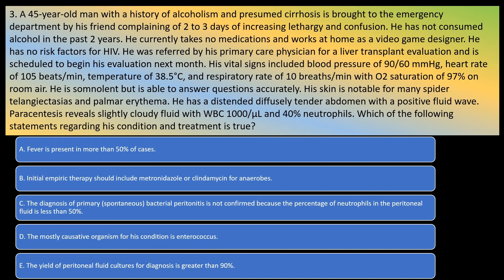Paracentesis reveals slightly cloudy fluid with WBC 1000 per microlitre and 40% neutrophils. Which of the following statements regarding his condition and treatment is true? A: Fever is present in more than 50% of cases. B: Initial empiric therapy should include metronidazole or clindamycin for anaerobes. C: Diagnosis of primary spontaneous bacterial peritonitis is not confirmed because the percentage of neutrophils in the peritoneal fluid is less than 50%. D: The most causative organism for his condition is Enterococcus. E: The yield of peritoneal fluid cultures for diagnosis is greater than 90%.